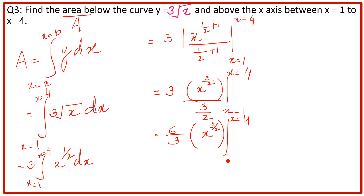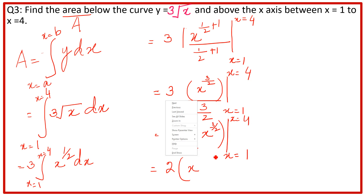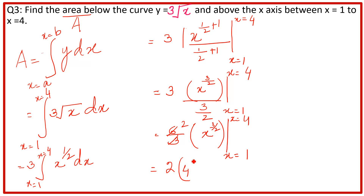Limit apply करेंगे — x = 4 to x = 1। Upper limit 4 पहले: 4^(3/2), minus lower limit 1: 1^(3/2)।